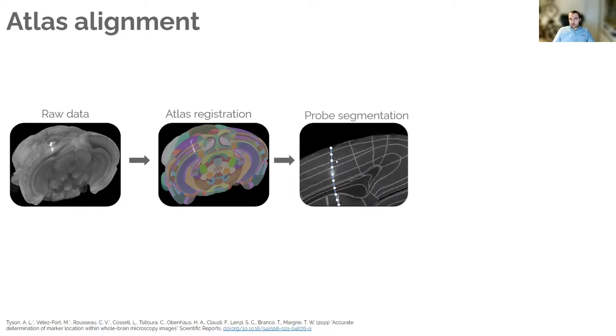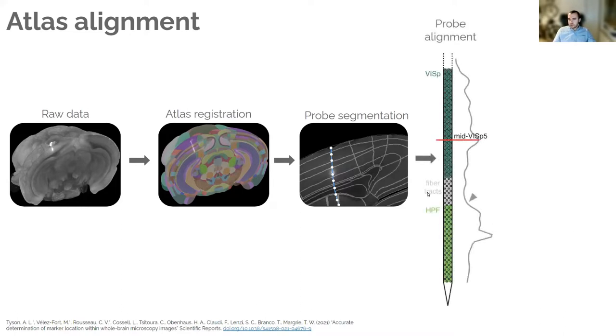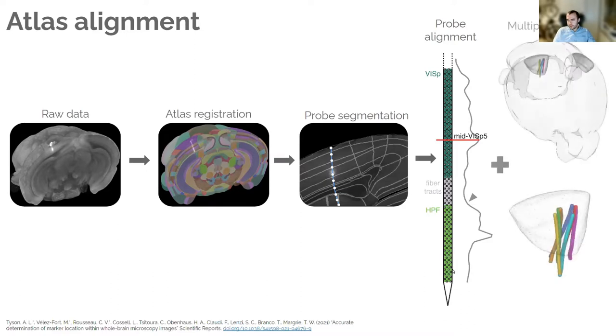Then you segment out your probe in some way. This might be an automatic approach or it might be manual, just like key points along the track. Then you can align your recordings to the anatomy. So in this schematic here from this probe, you can see that all these probe sites are in primary visual cortex and these are in the hippocampus. And then you can use these transforms to analyze and visualize all your probes together. Here we've got seven recordings from primary visual cortex from seven different animals that we've overlaid in a model of the Allen mouse brain.